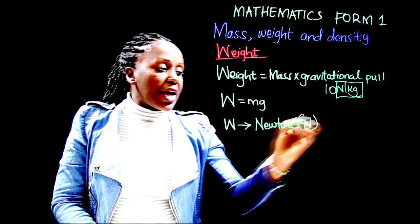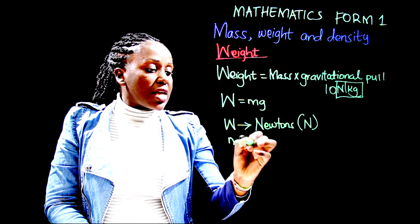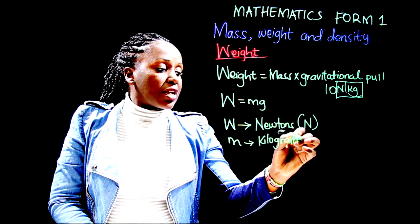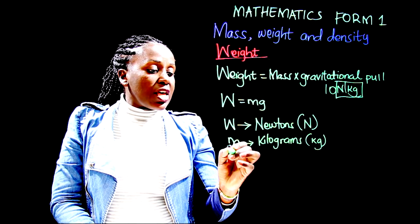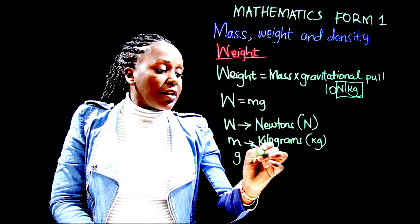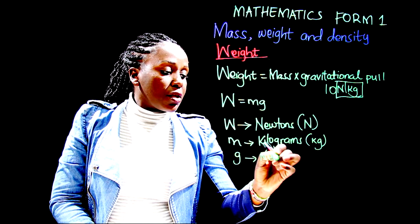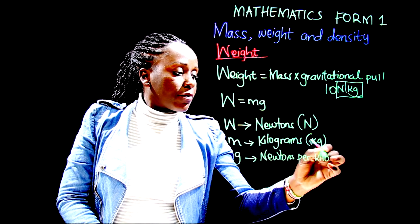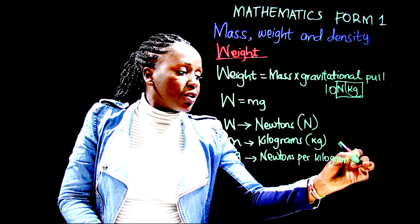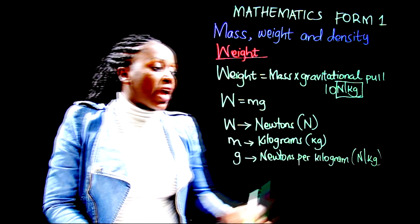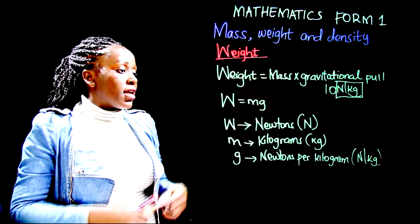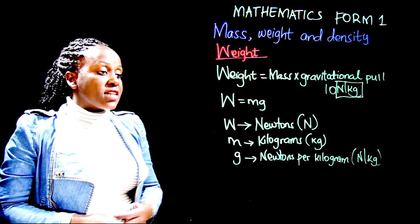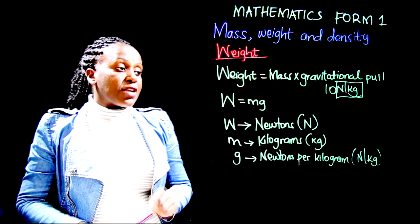The units of mass are kilograms, denoted by small k, small g. The units of gravitational pull are newtons per kilogram, denoted as N/kg. Always ensure that based on what the question asks you to calculate, you give the accurate units.